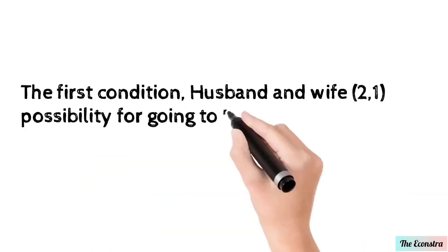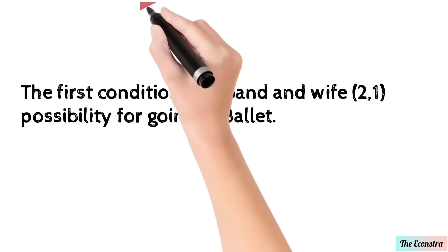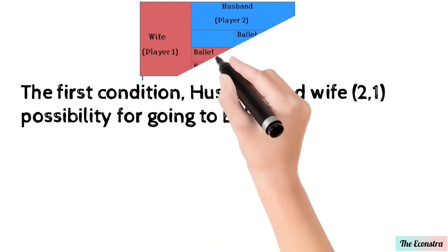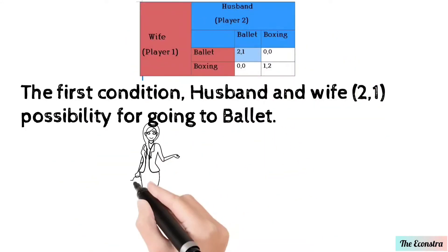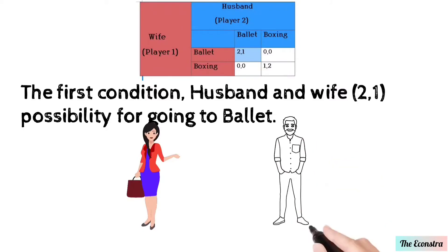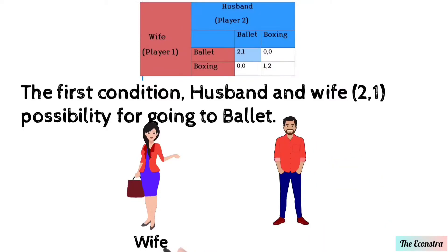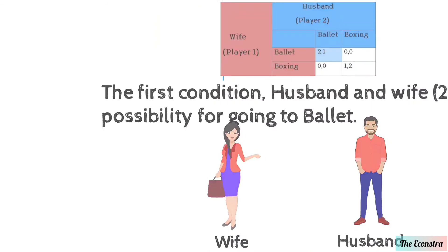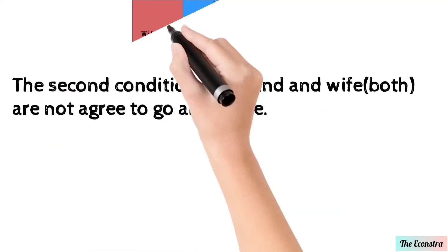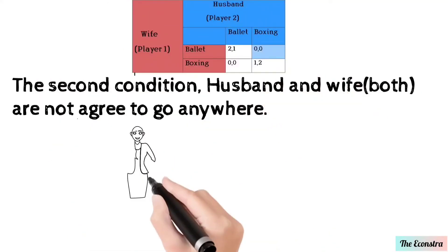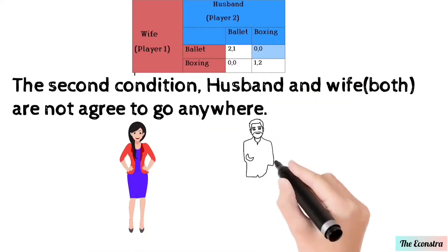In the first condition, husband and wife both agree to go to the belly dance, with a payoff proportion of 2 to 1. In the second condition, husband and wife do not agree to go anywhere.